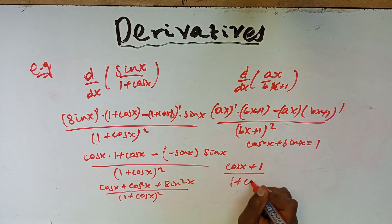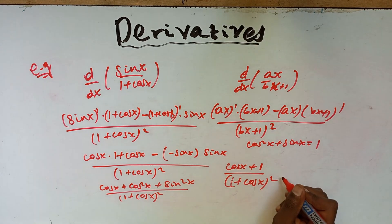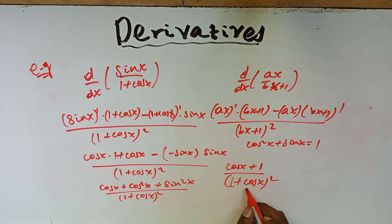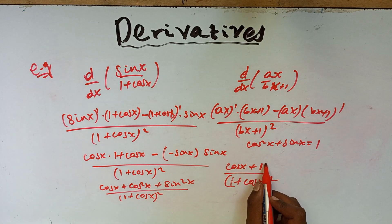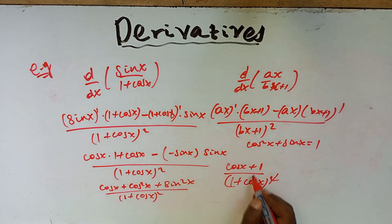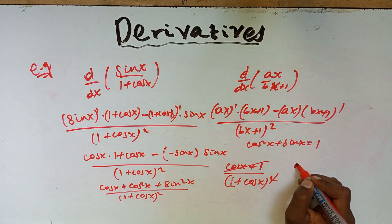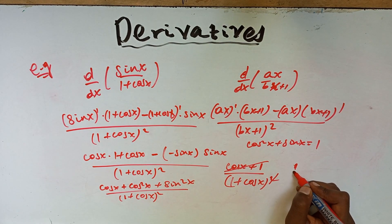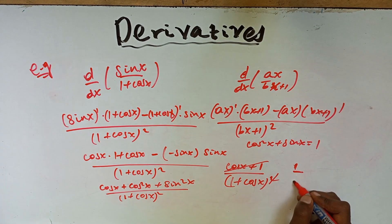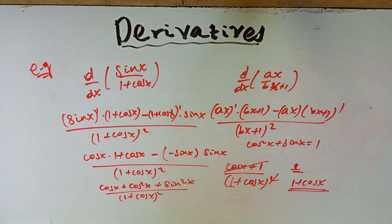We substitute cos squared x plus sin squared x with 1, giving us cos x plus 1 in the numerator, over (1 plus cos x) squared. Simplifying, (1 plus cos x) cancels, leaving 1 over (1 plus cos x) as the final answer.